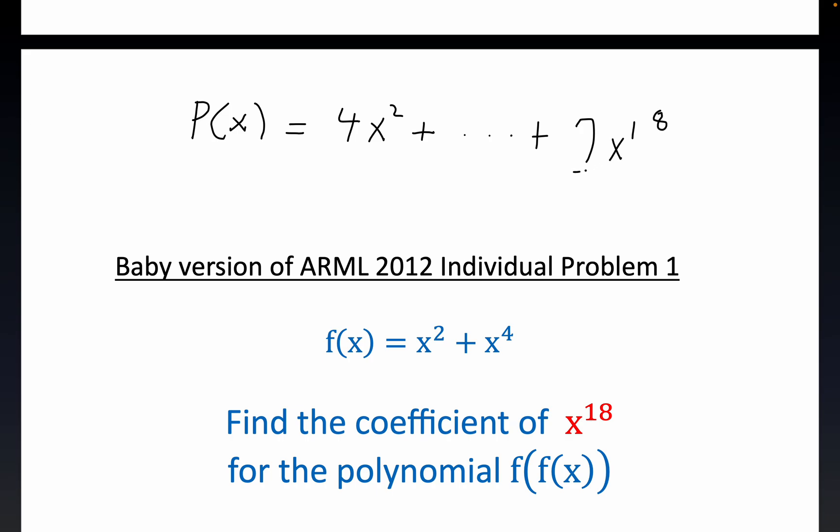The 7 right here is what we call a coefficient. 4 is a coefficient as well, but 7 would be the coefficient of x to the 18th just in this arbitrary polynomial.